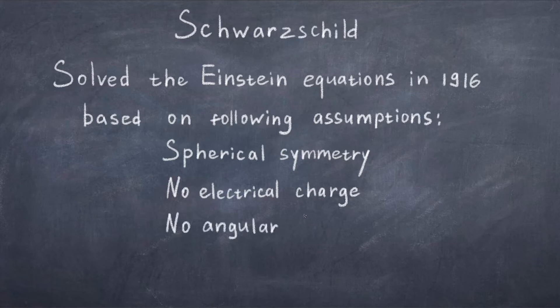What he did was assuming spherical symmetry, zero electrical charge, and zero angular momentum of the mass, and then he put the cosmological constant to zero.